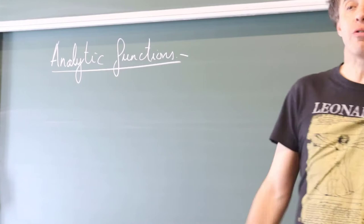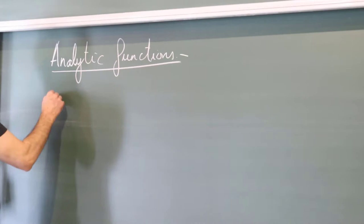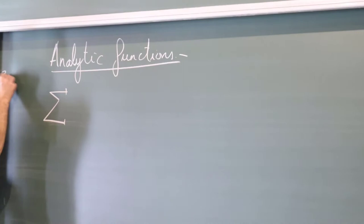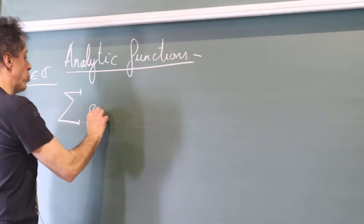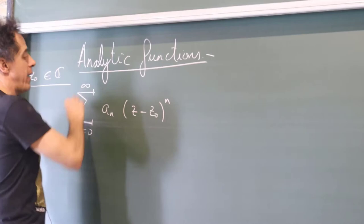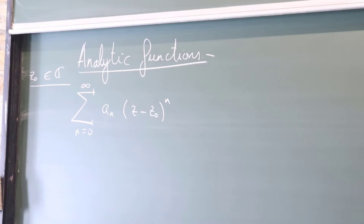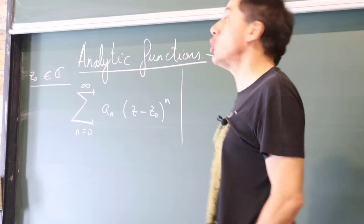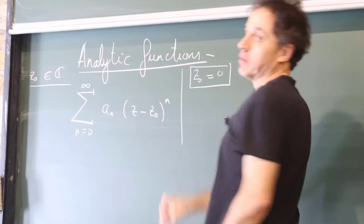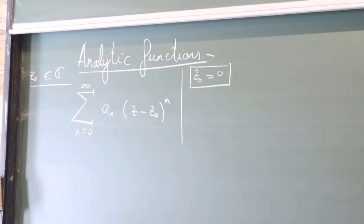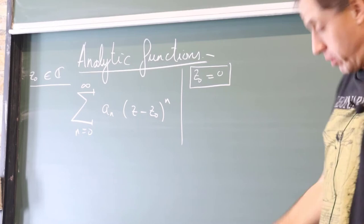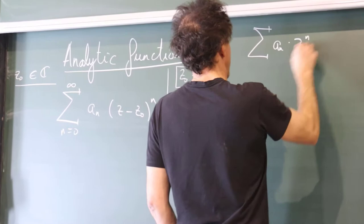Consider a power series centered at a point z₀, where the aₙ are general complex numbers. This is a series of polynomials, and you can speak about the domain of convergence. It's no restriction to assume z₀ = 0 in what follows, since all facts can be easily translated from the case z₀ = 0 to another point. So let us consider power series of the kind ∑aₙzⁿ.